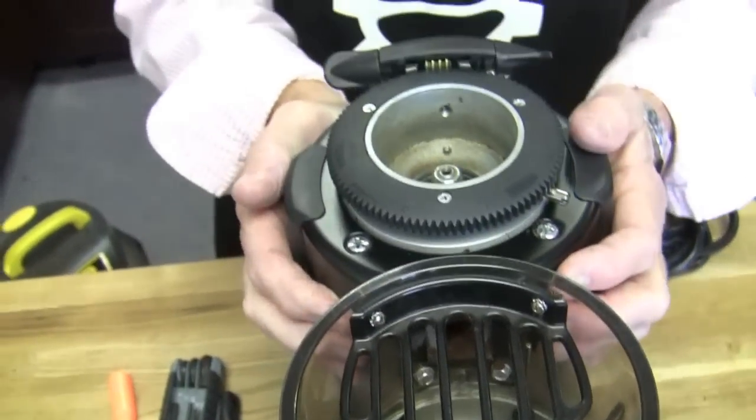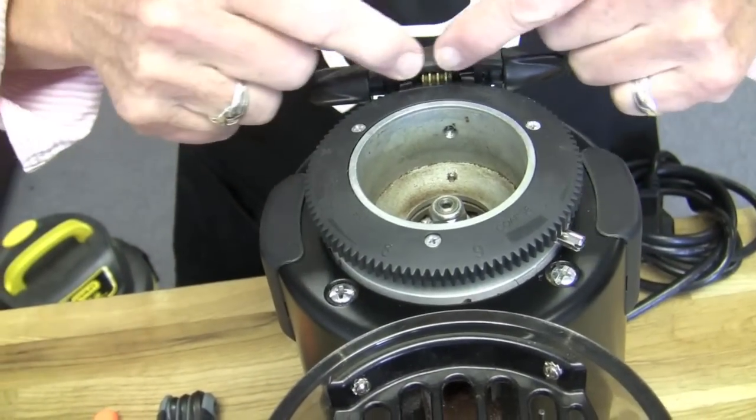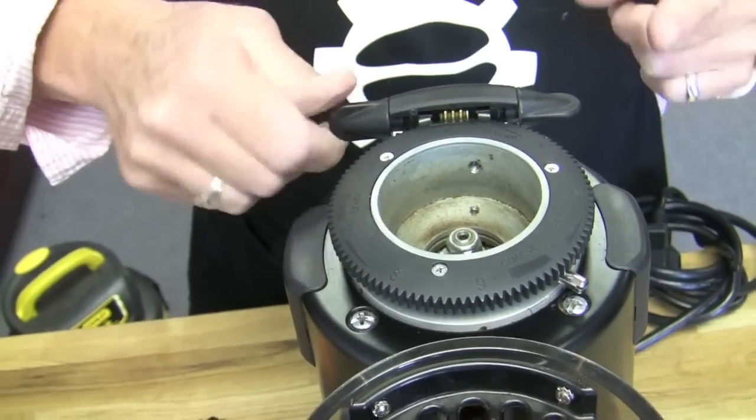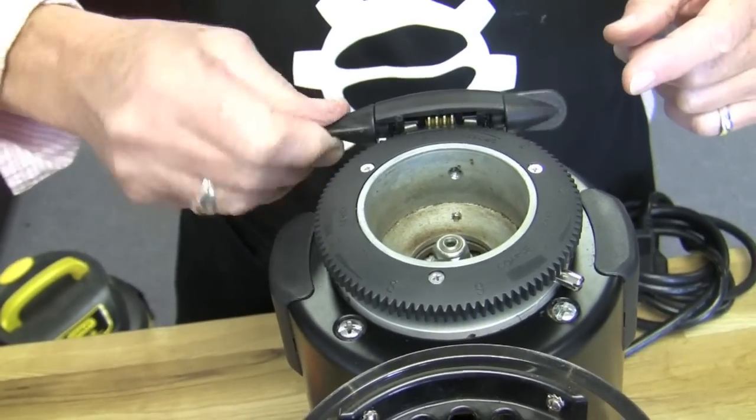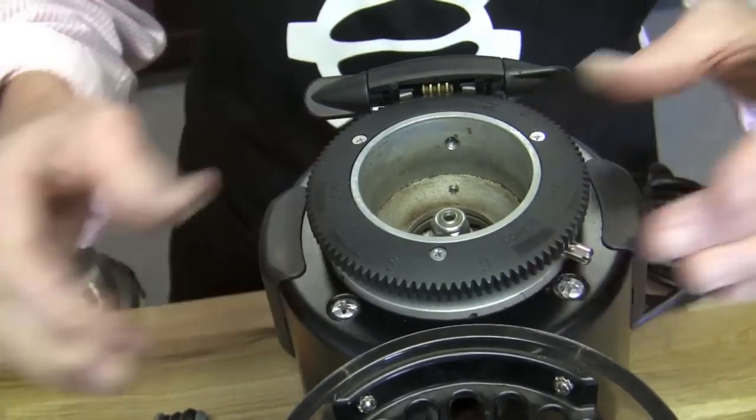So the other thing with this grinder is, this is driven, this is our adjustment ring, and you can see this is called a worm drive. This is a really fine adjustment. This is one of the nicest adjustments out there in my estimation.